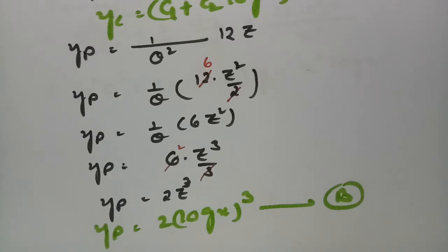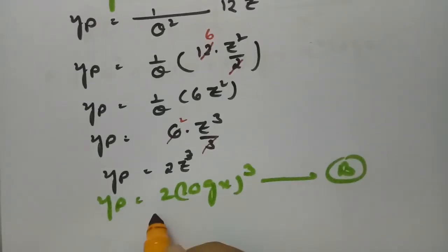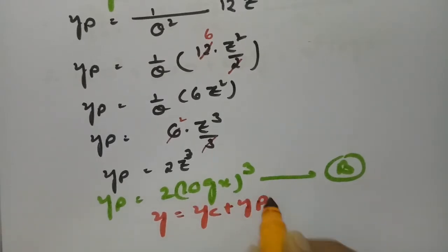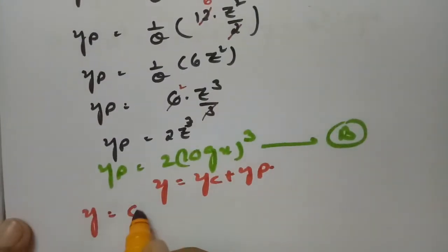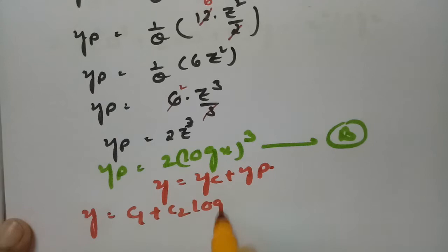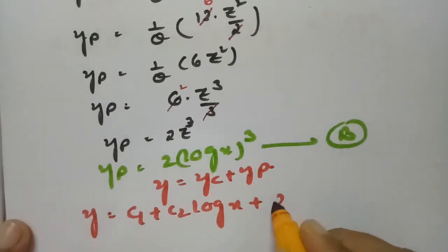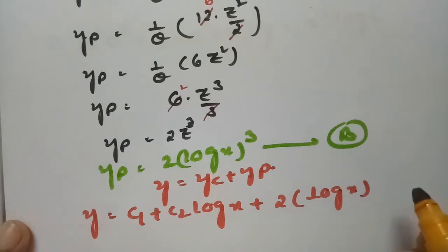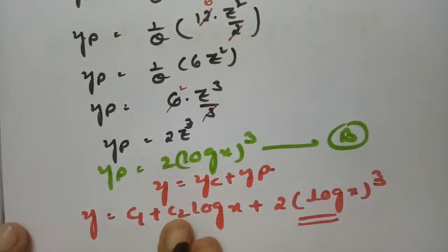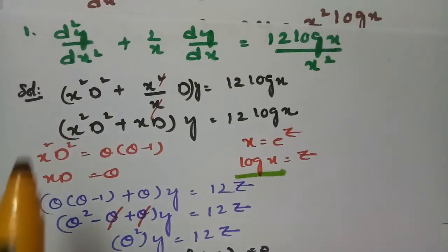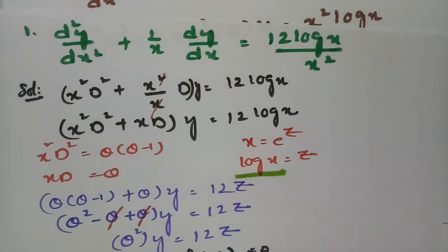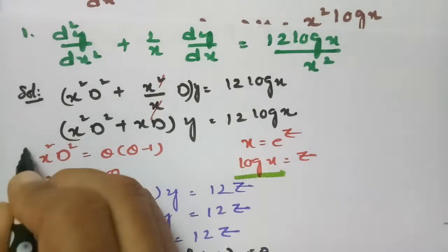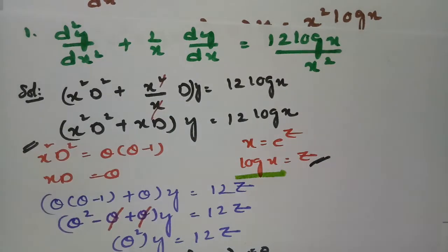Therefore the general solution is y = yc + yp = c1 + c2*log(x) + 2(log x)³. This is the final answer for the first question. Remember: since there was no x² factor originally, we had to bring x² to the other side first to form the Cauchy's Euler equation, then apply the substitution to transform it into a linear equation with constant coefficients.